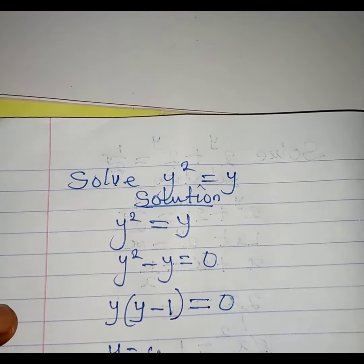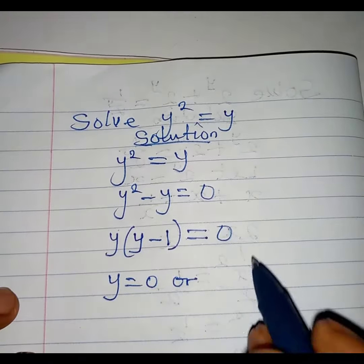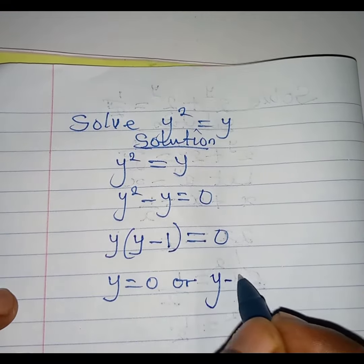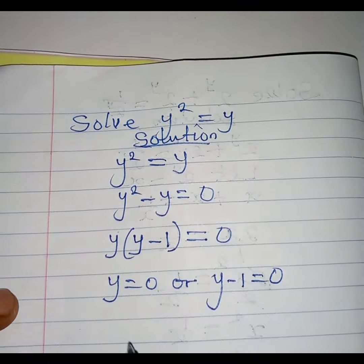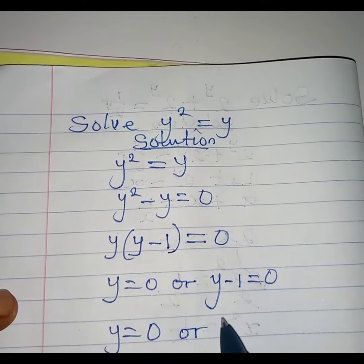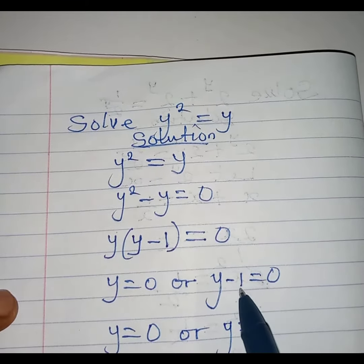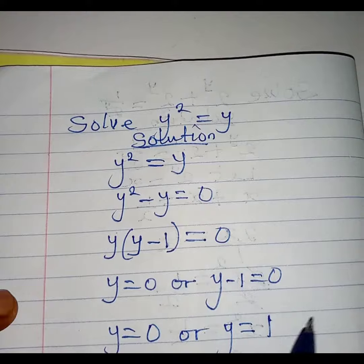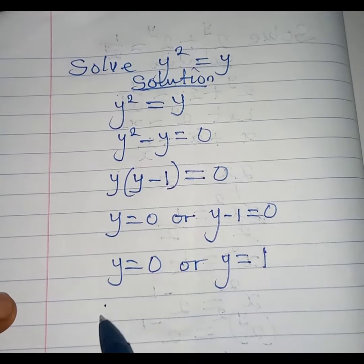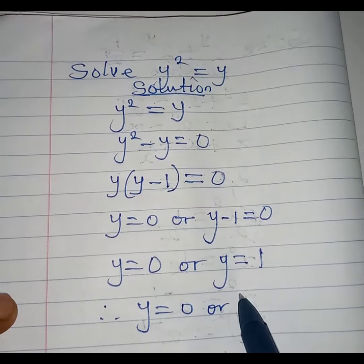Either y is equal to zero, or y minus one is equal to zero. So y remains zero, or on this side we have y equal to zero plus one, which would be one. Therefore, y equals zero or y equals one.